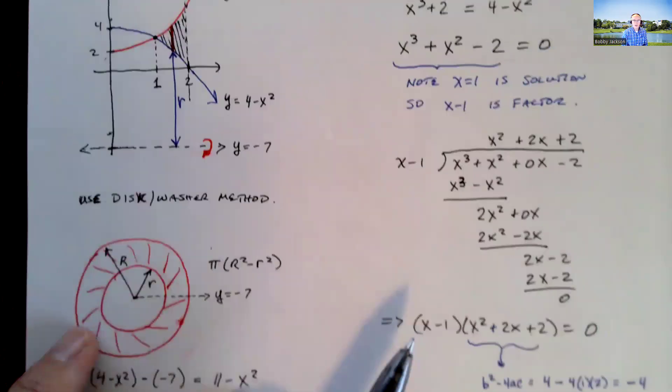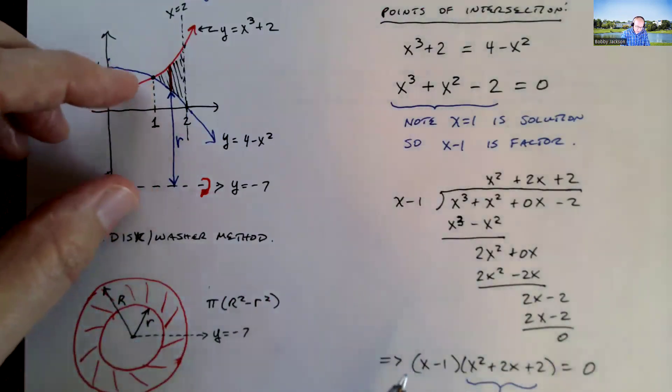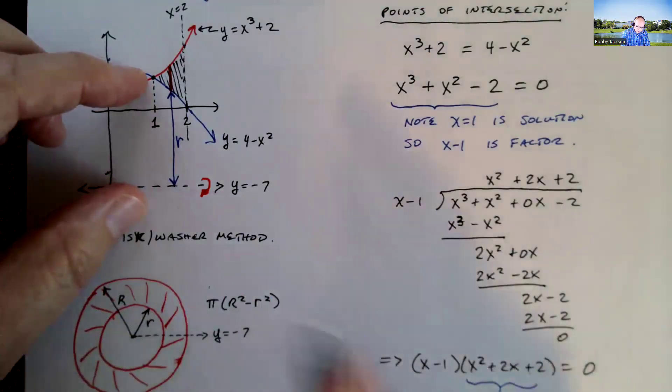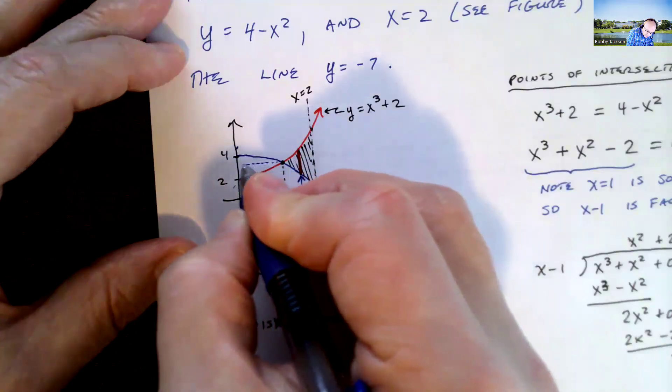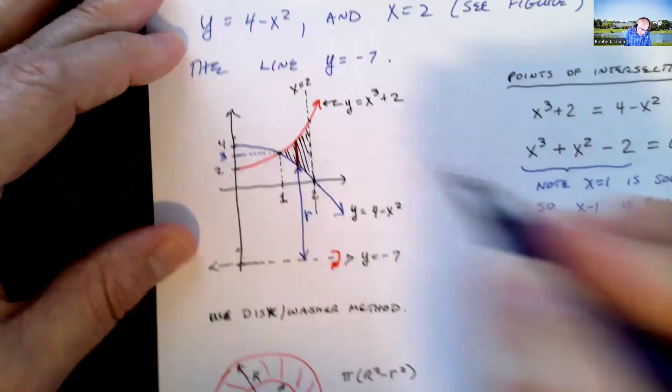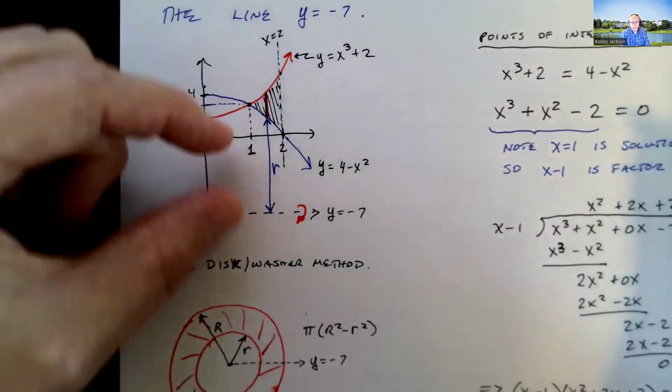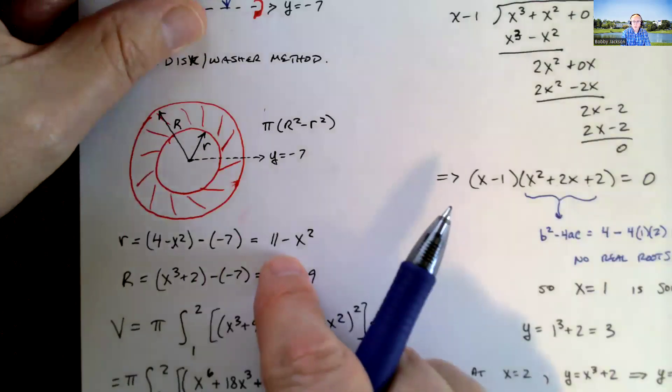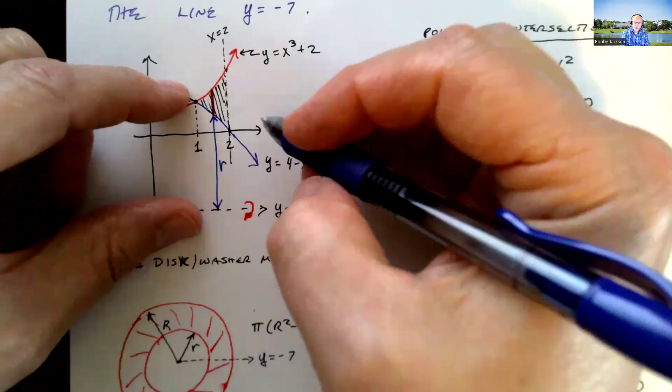And notice that makes sense. When x is 1, the value of little r would be from here to here. Remember the height of this we said at 1 was 3. And so from negative 7 up to 3, that's a total of 10. 3 plus 7, 10. And notice I get that when I plug in 1 in here: 11 minus 1 squared is 11 minus 1 is 10.